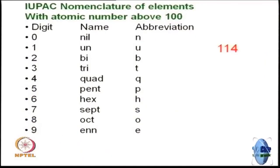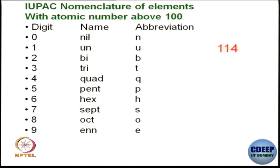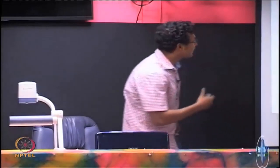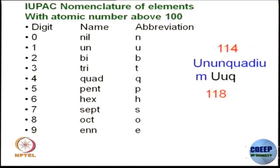The simple IUPAC rule is: 0 is pronounced as nil, 1 as un, 2 as bi, and so on up to 8 as oct, and 9 as en. So for example, if an element has atomic number 114, it should be named as ununquadium.